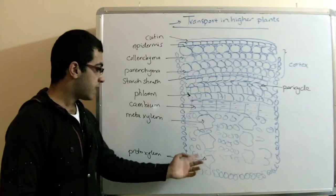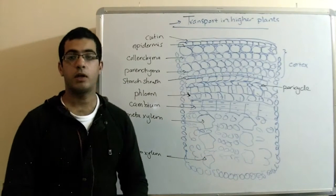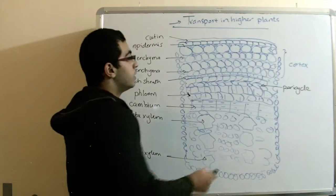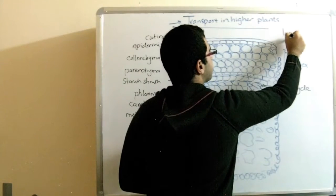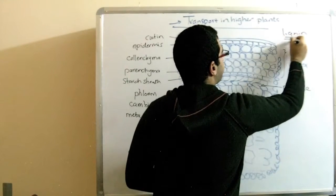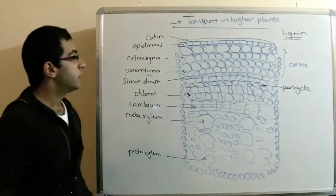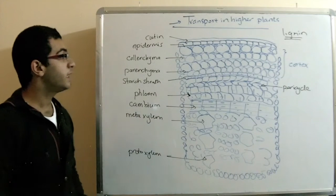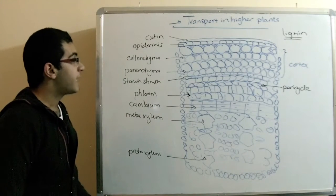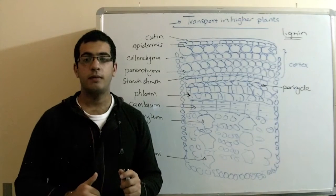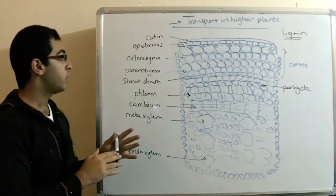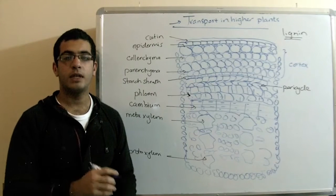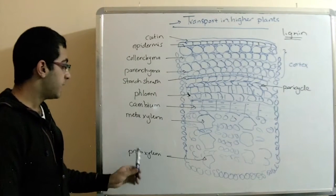Also, the walls of the xylem vessels are strong walls because they are supported by lignin. Supported by the deposition of lignin at the walls. And this lignin has annular and spiral shapes. So, it's deposited in the walls by several shapes. And this structure helps in strengthening the wall of the xylem vessels.